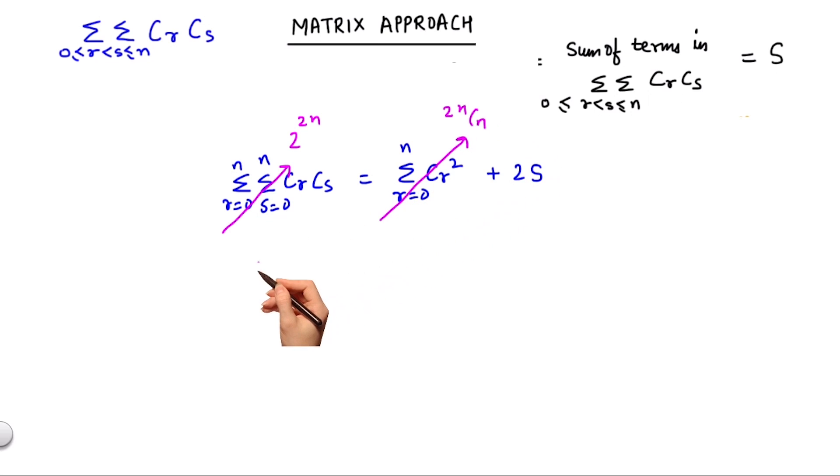Hence my S, which is the sum of the connected sigma in the equation, becomes 2 to the power 2n minus 2n Cn divided by 2, which is my required answer.